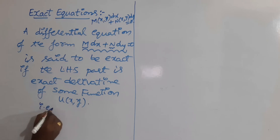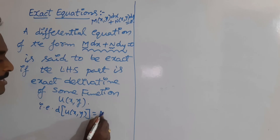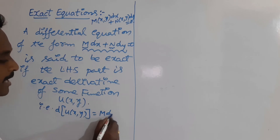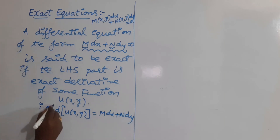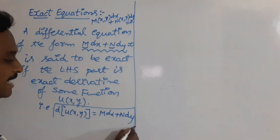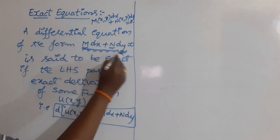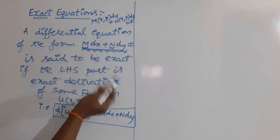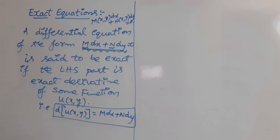That is, the derivative of u(x, y) should be equal to M dx plus N dy. So, the meaning of an exact differential equation is that the left-hand side part of the equation is the exact derivative of some function u(x, y).